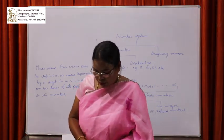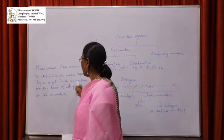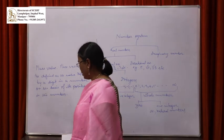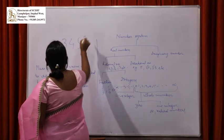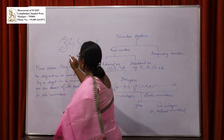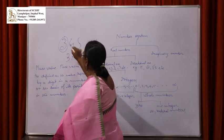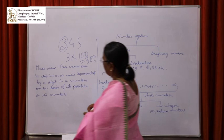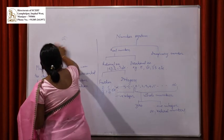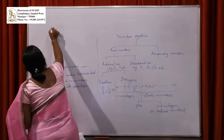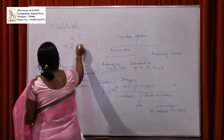Place value. Place value of the numbers. Place value can be defined as the value represented by a digit in the number, on the basis of its position in the number. Suppose the number is 345. Place value of 3 is 300.